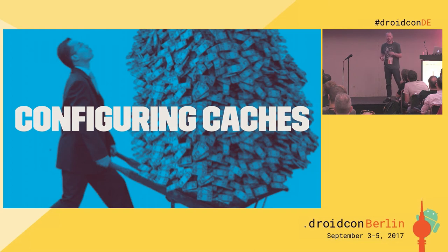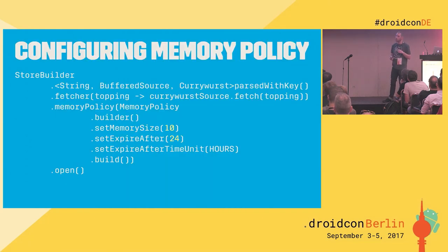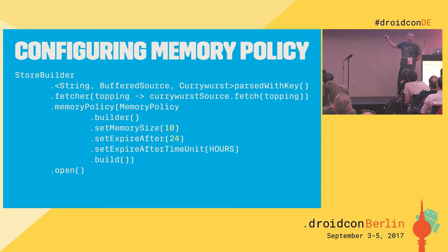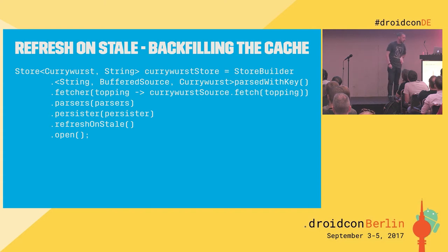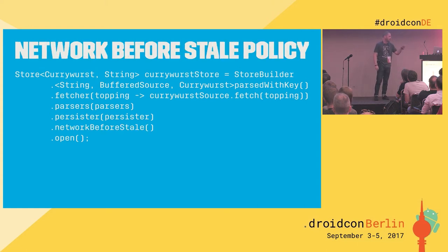We can configure memory policies: size, expire-after, and specify a unit — in this case 24 hours. It uses a Guava cache under the hood. For stale data, we can say 'refresh on stale' — it gives you stale data while backfilling the cache automatically. Or you can specify 'network before stale' and it'll attempt the fetcher before returning data. If the network fails, you'll get the stale data.